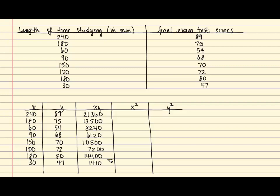Next, we're going to find the x squared values, and these values are found by simply squaring each x. So for our first value, we're going to take 240 squared, which gives us 57,600. For the next x squared, we're going to square 180, and that gives us 32,400. You'll repeat this process until you find all of the squared x values.